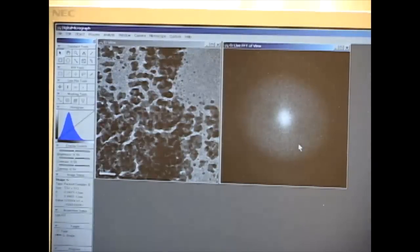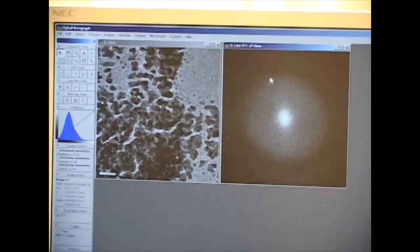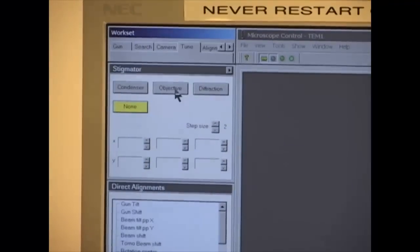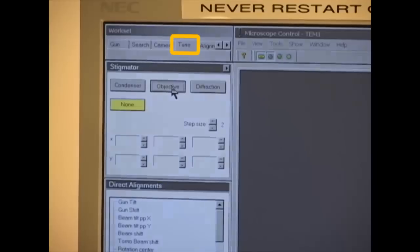If the circle in the FFT is not round, it means there is objective stigmation.